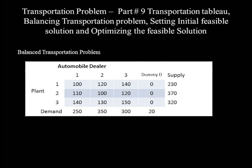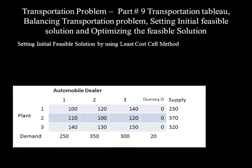The balanced transportation problem, which is used to set the initial feasible solution, looks like this. Let's proceed to set the initial feasible solution using the least-cost cell method. We can also use the northwest corner method or Vogel's approximation method. In whatever method we set the initial feasible solution, the optimal transportation cost we determine will be the same.